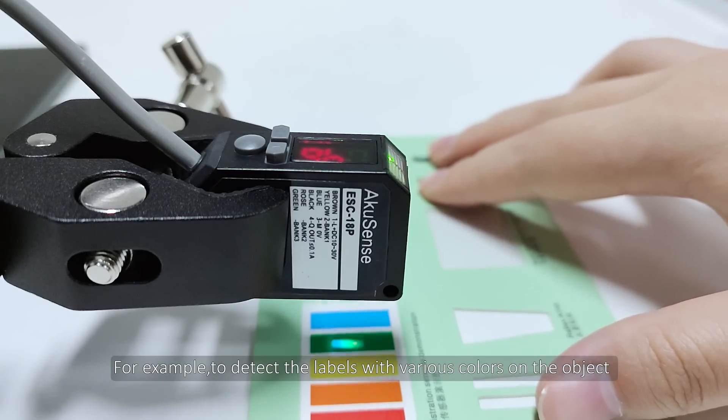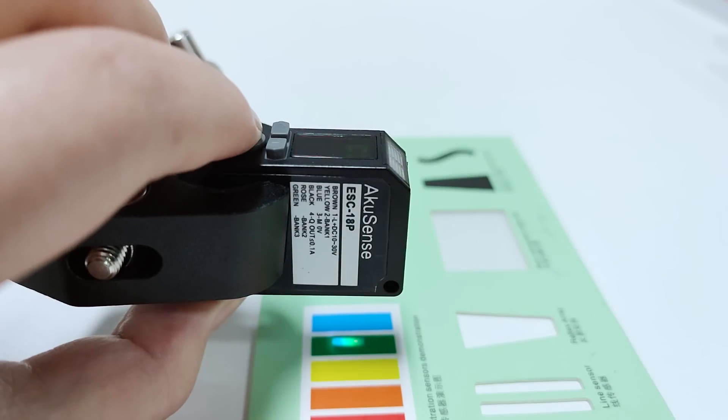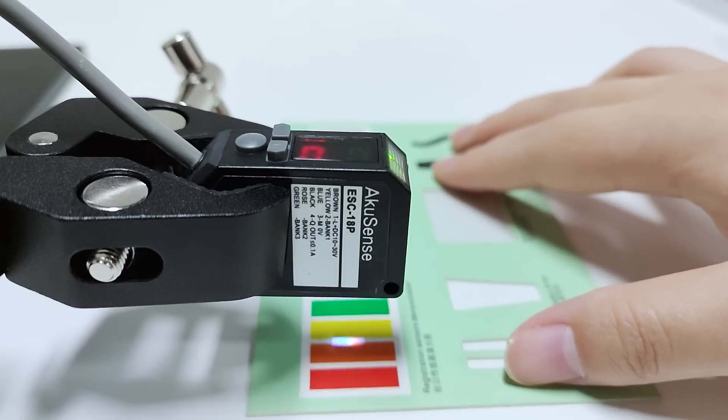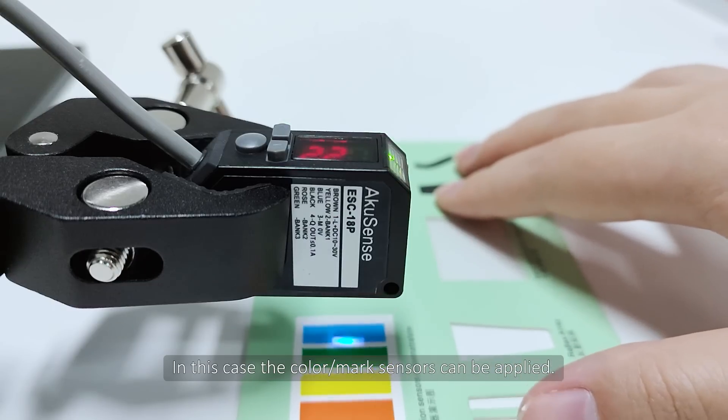For example, to detect labels with various colors and objects. And sometimes we need to distinguish colors with quite a small difference. In this case, the color and mark sensors can be applied.